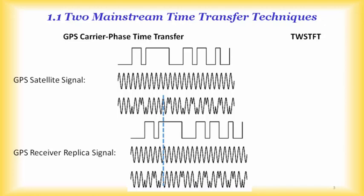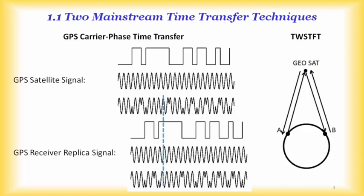If we have another station with another GPS receiver, we can also measure the time difference between that receiver and the satellite, and then obtain the time difference between one station and the other. For two-way satellite time and frequency transfer, the concept is straightforward: we send a signal from A to B via a geostationary satellite, then B sends the signal back to A via the same satellite, giving us a time difference between A and B.